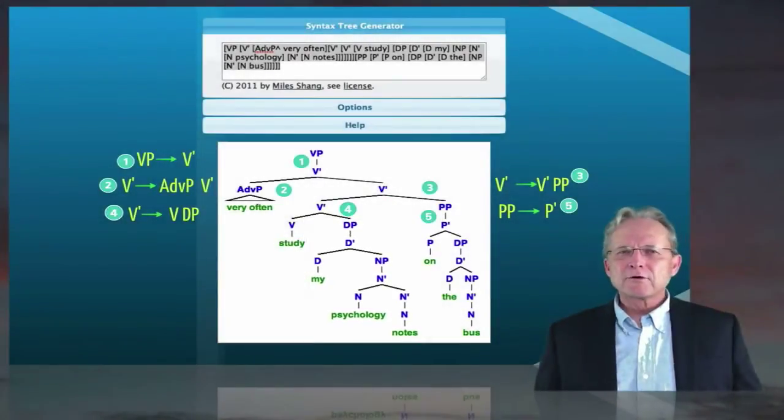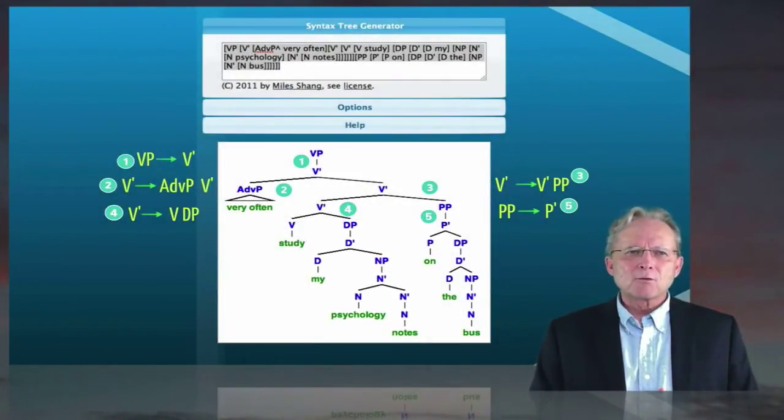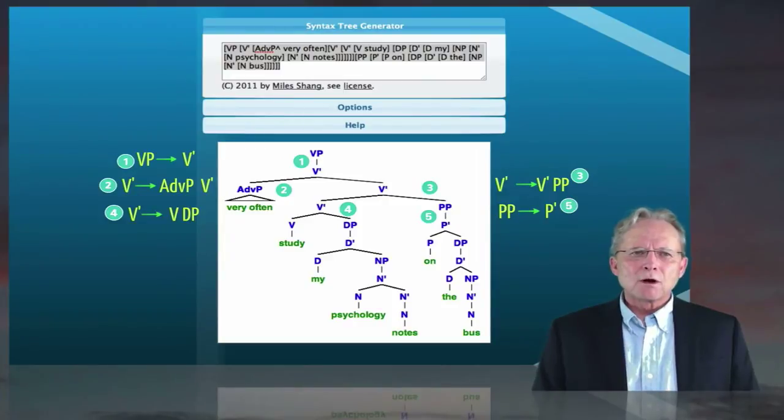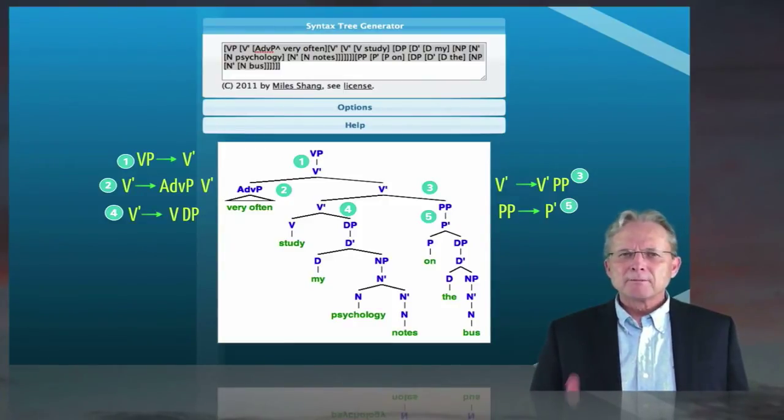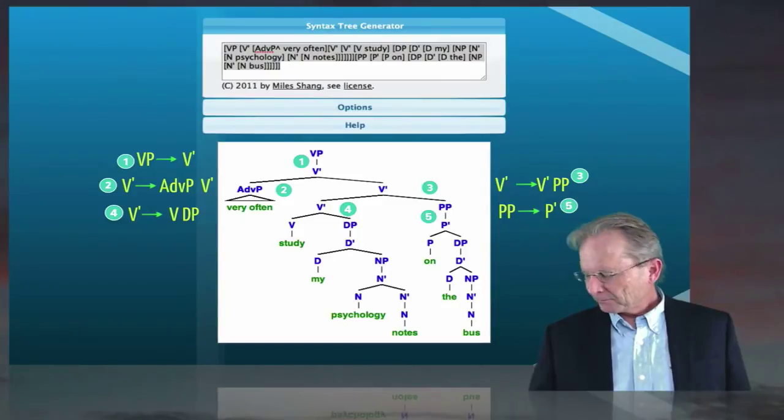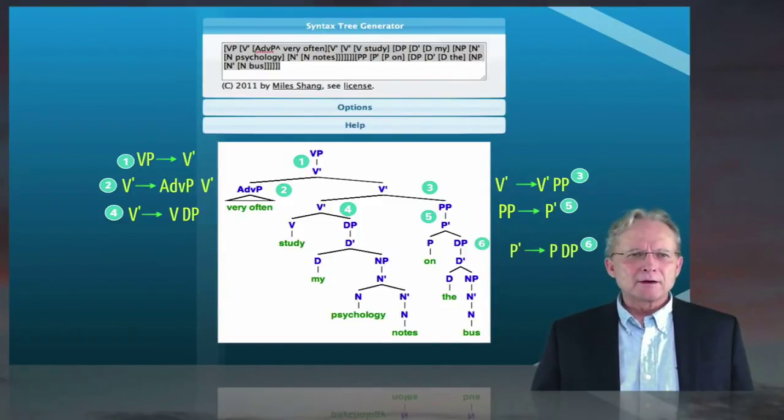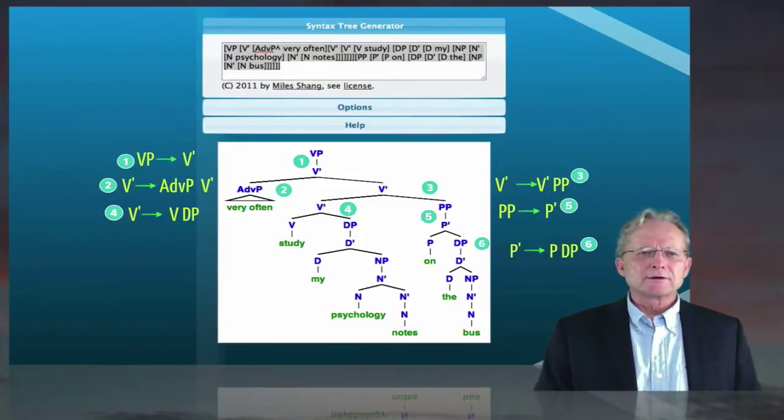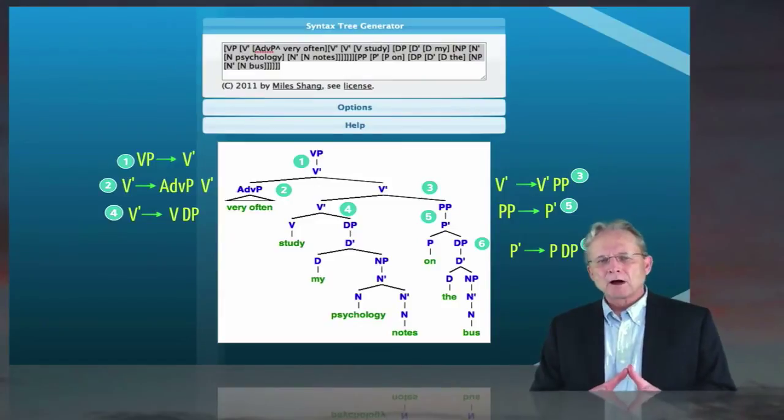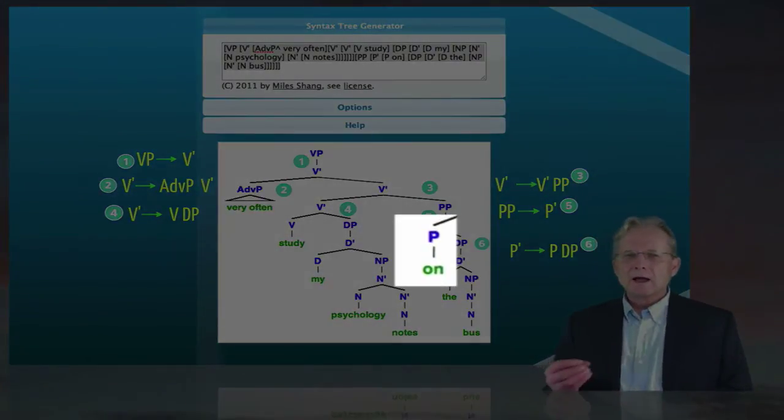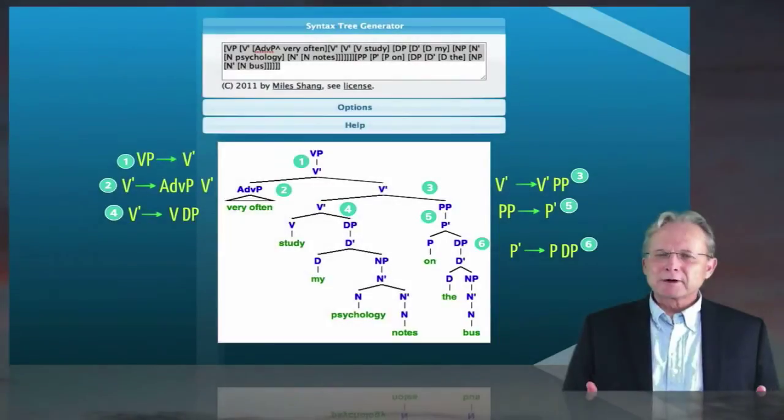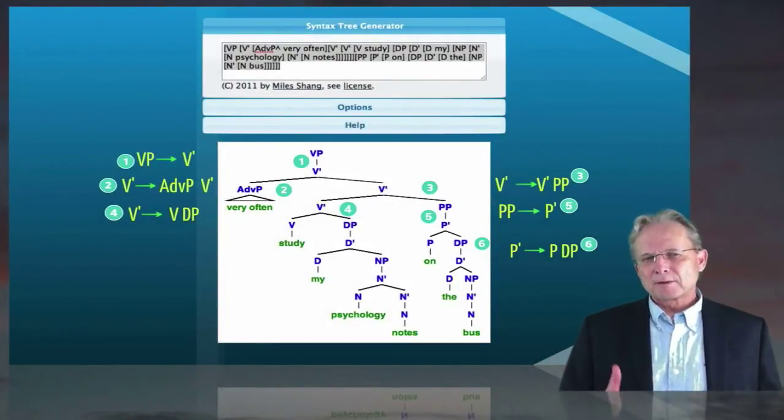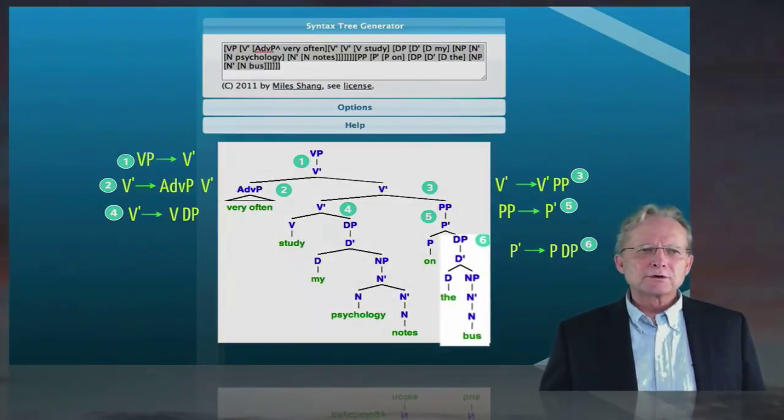And the prepositional phrase then can be elaborated in the same way. So a prepositional phrase consists of minimally a P bar. And that can then be elaborated as a P bar that minimally contains its P, the head of the prepositional phrase. In this case, it's on. And on, as is typically the case for prepositional phrases, this on preposition head has a complement to the right, which is a DP.